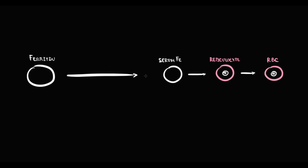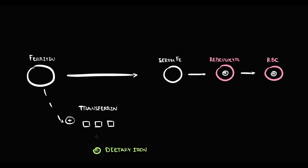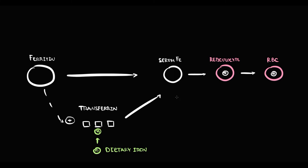To keep the storage site fully filled with iron, ferritin uses transferrin molecules. Transferrin molecules are delivery boys — they meticulously search for dietary iron. Once they find iron, they initially deliver it for production of red blood cells. But if serum iron level is okay, they deliver iron to ferritin, which serves as the storage site.